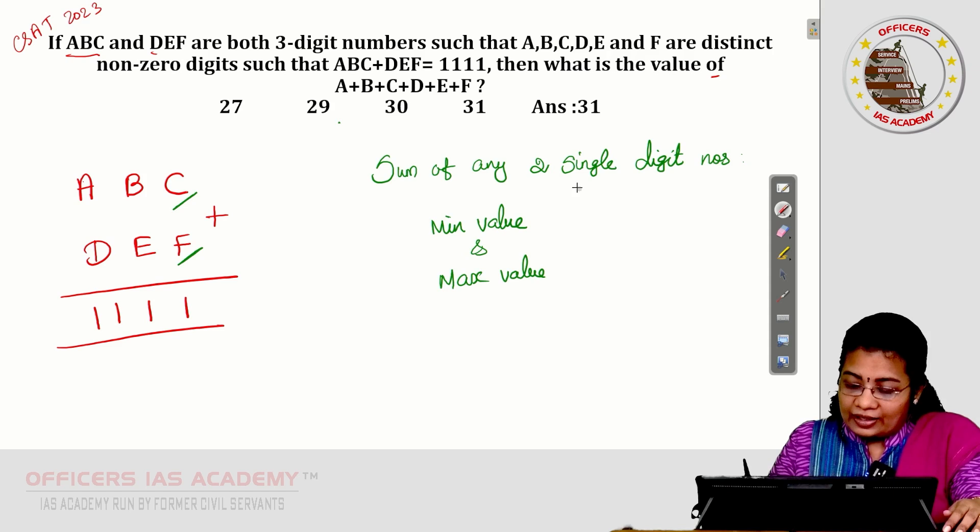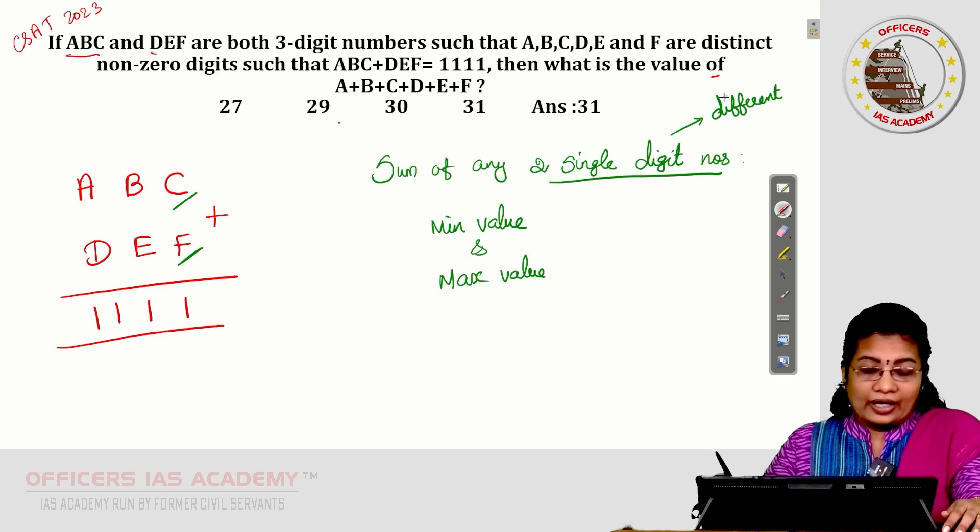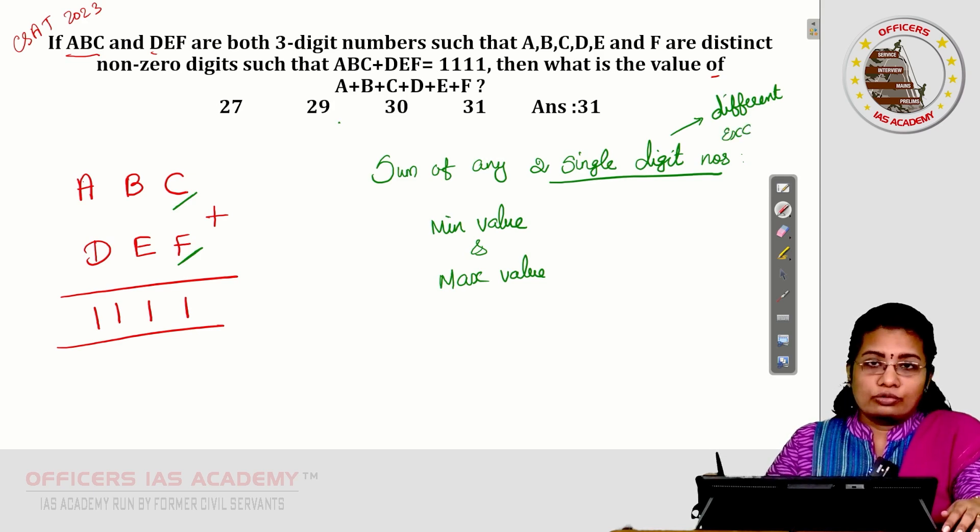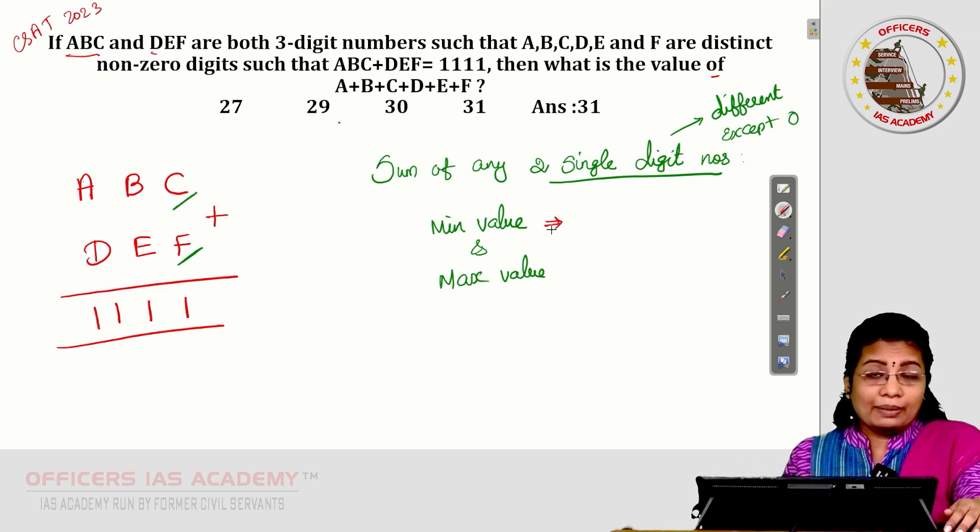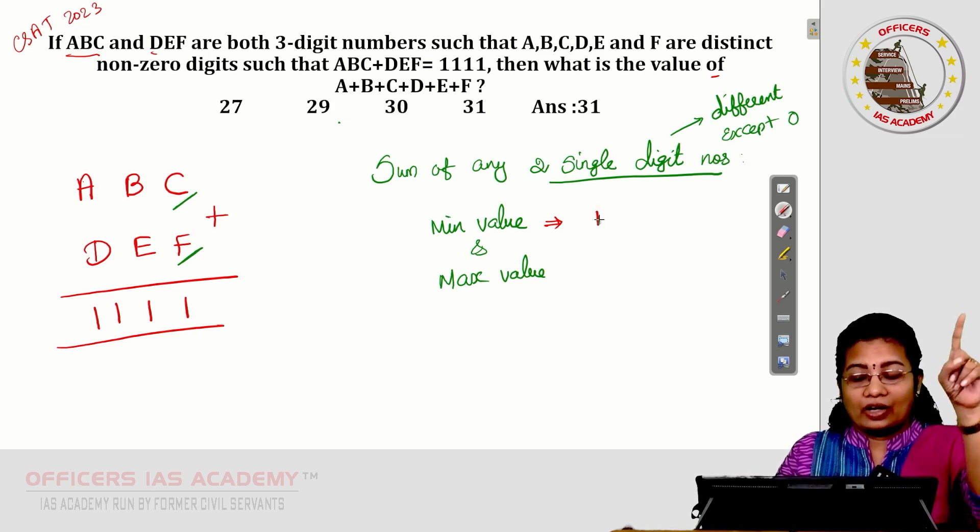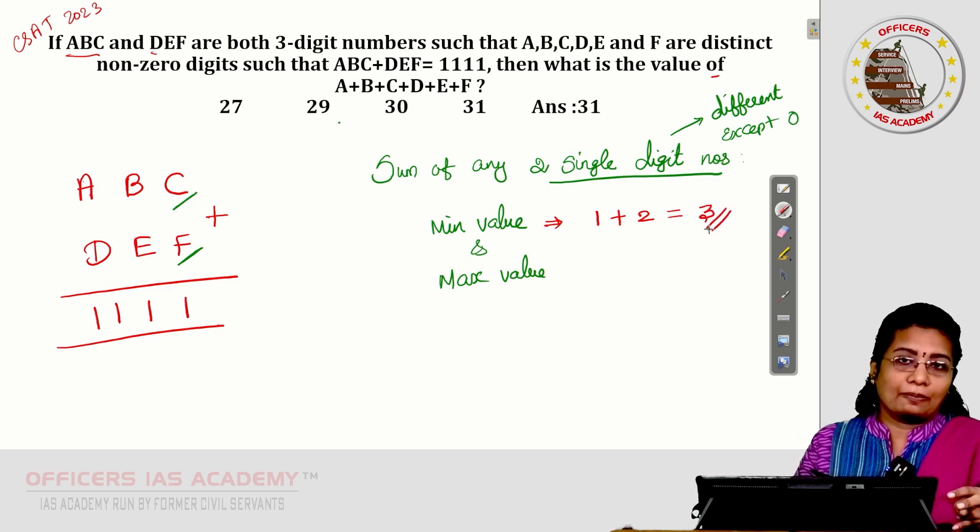These single-digit numbers are different numbers and non-zero, so I write except zero. Minimum value means put minimum value 1 after 0, 1. Next minimum value 2. So, here 1 plus 2, 3. 3 is the minimum sum.